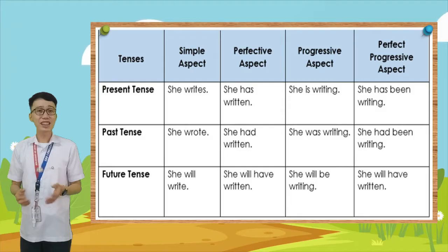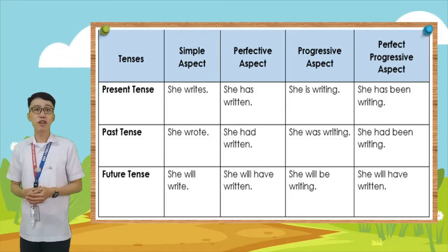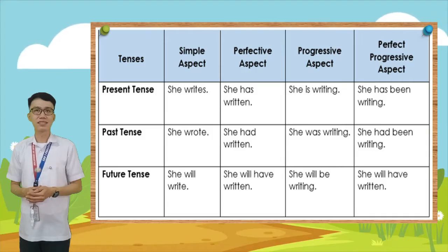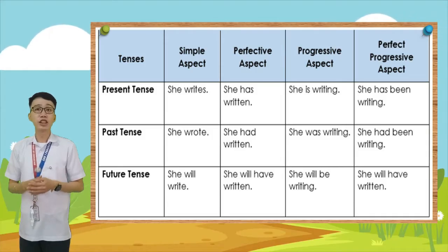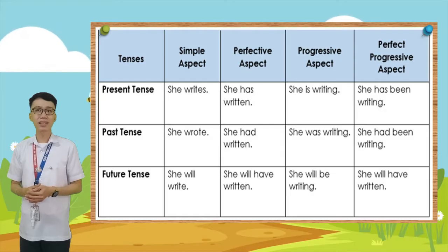Next is future tense. In simple aspect — 'she will write.' In perfect aspect — 'she will have written.' In progressive aspect — 'she will be writing.'